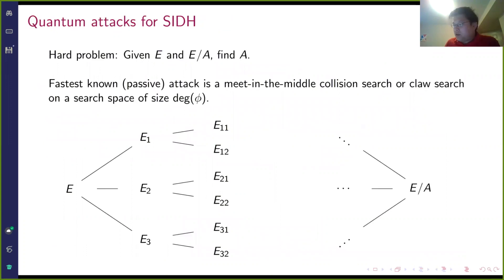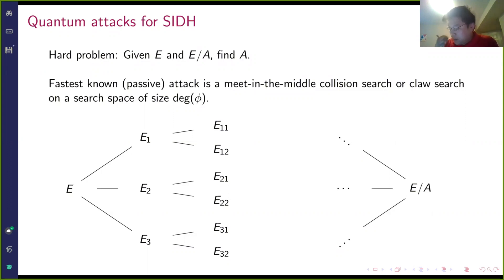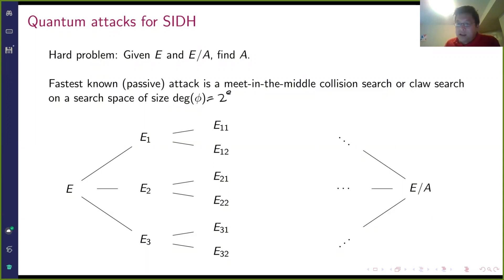Now for quantum attacks against SIDH. The fastest known quantum attack at this point isn't really what I'd call a quantum attack — it's a brute-force collision search that you speed up using quantum algorithms, just as you can speed up inverting any one-way function. There's nothing specifically quantum about it. What you're looking for is an isogeny of degree 2^e, and you want to find it.